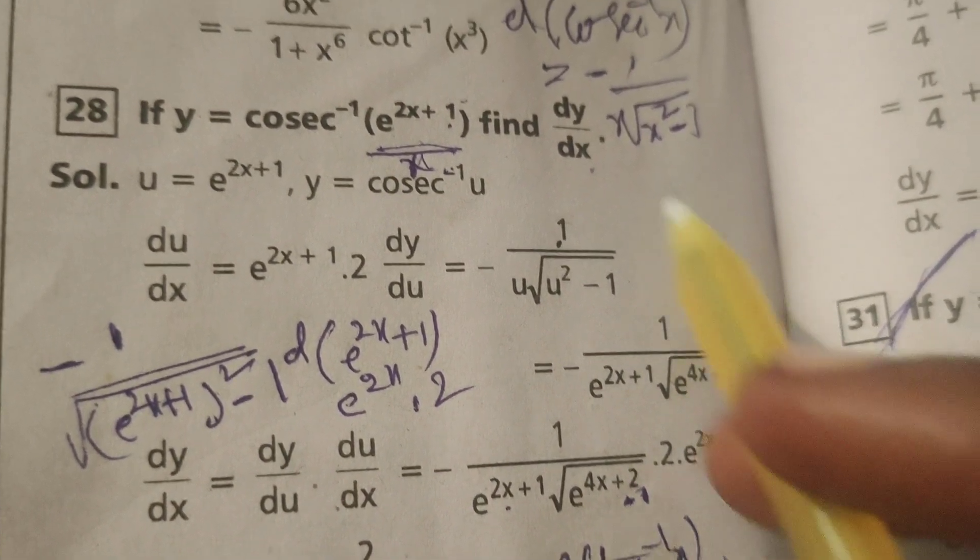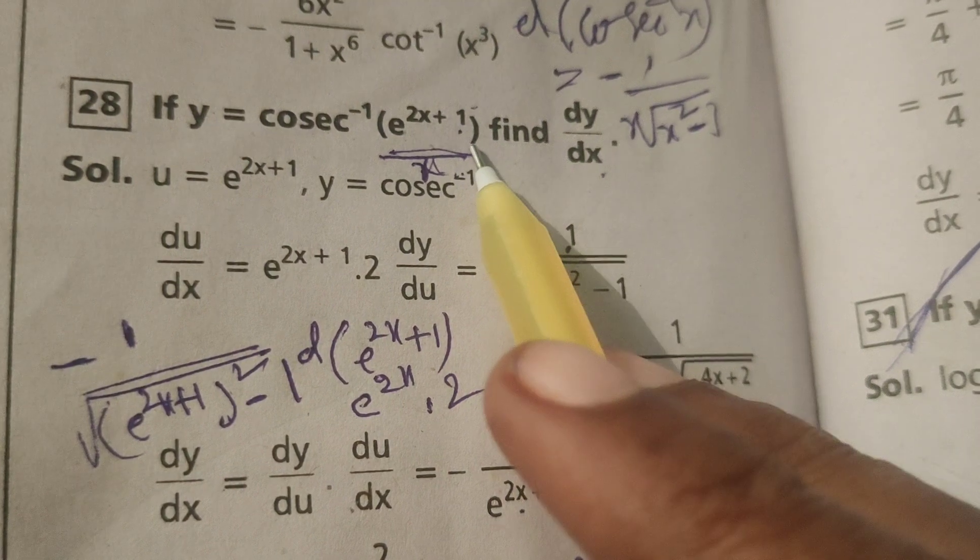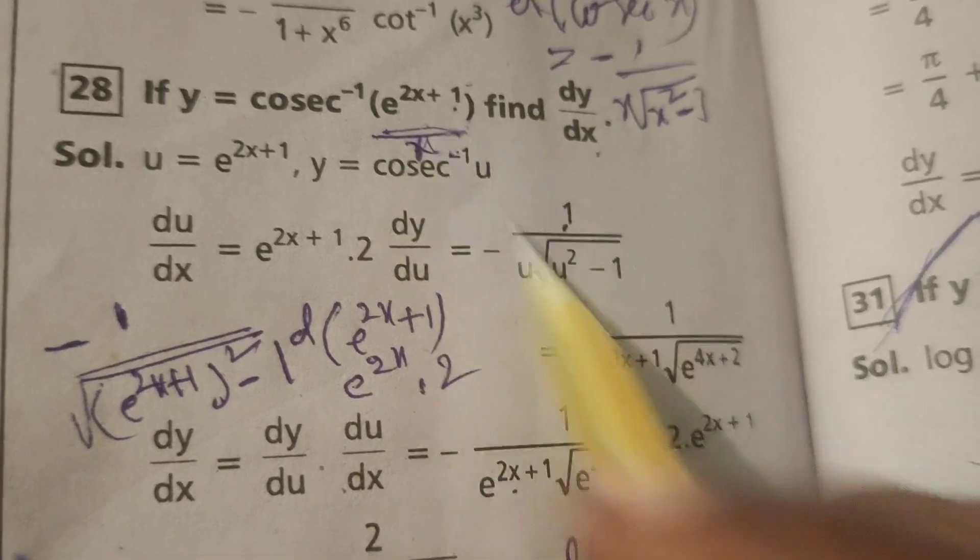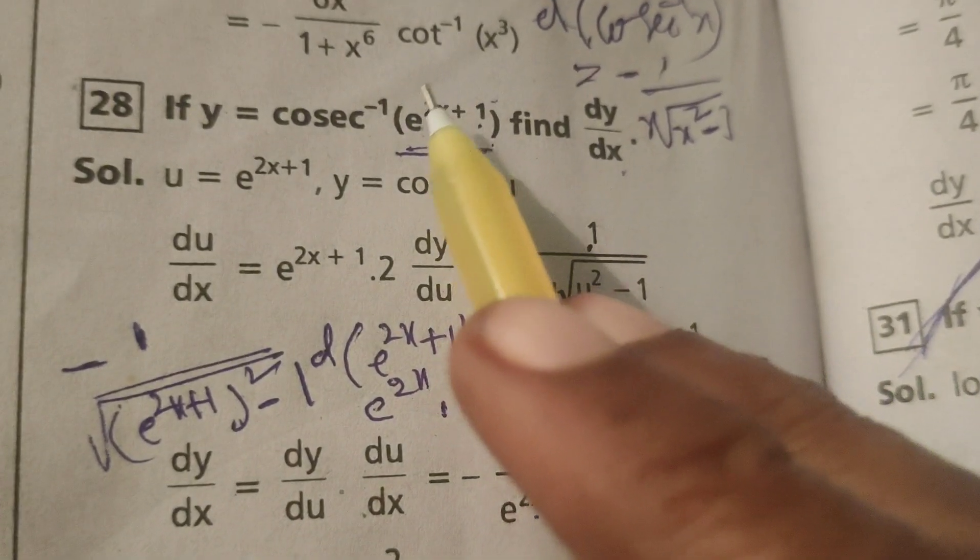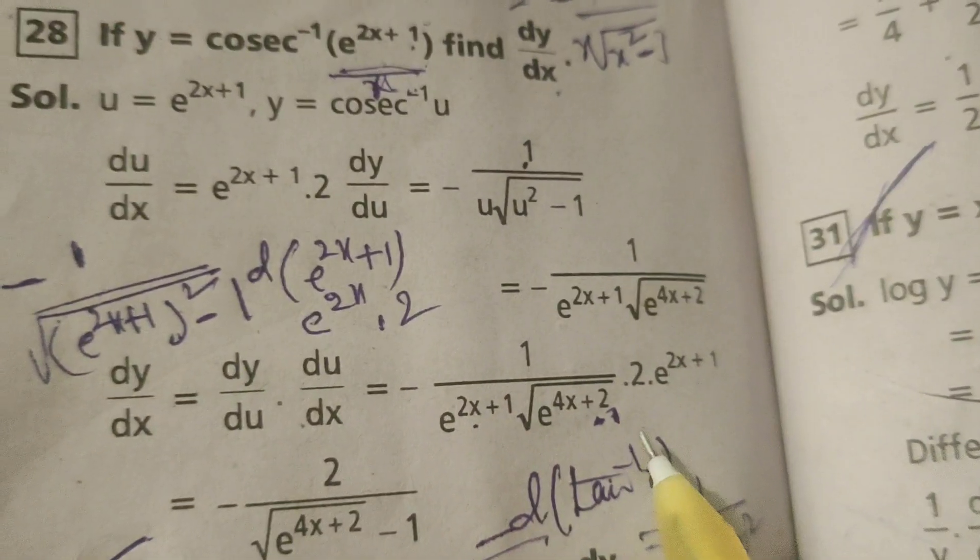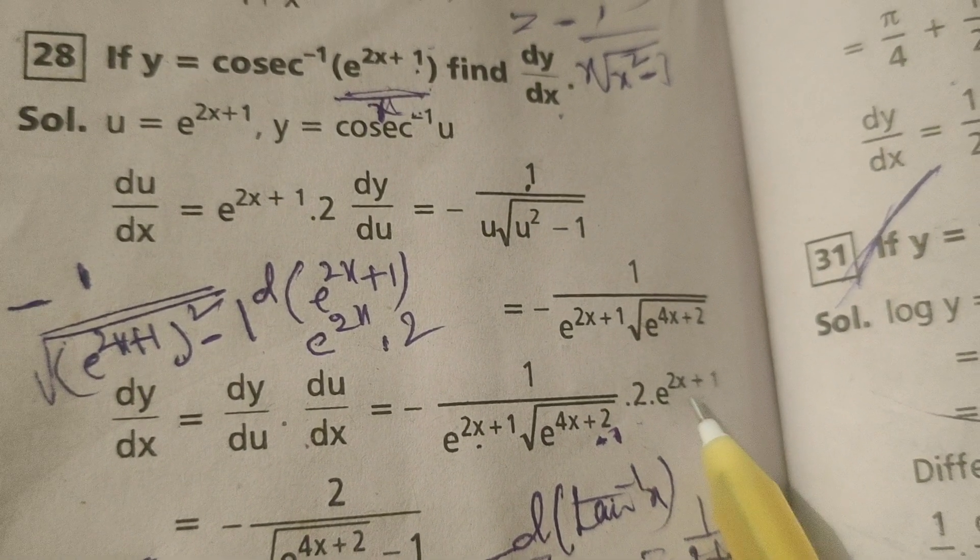Differentiation of e power 2x plus 1 is e power 2x plus 1. Again, 2x plus 1 means 2. So 2 e power 2x plus 1.